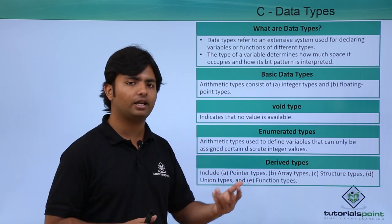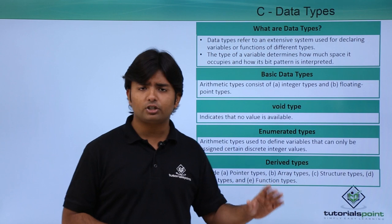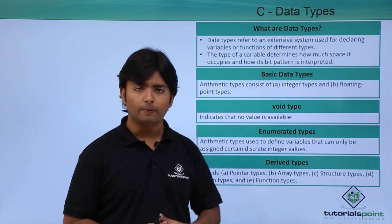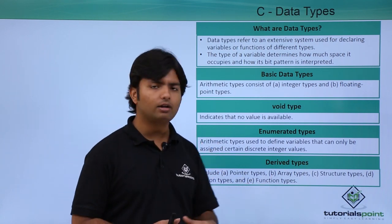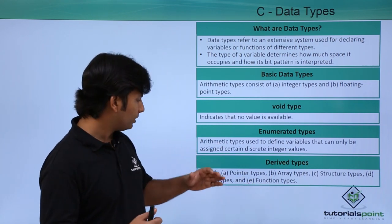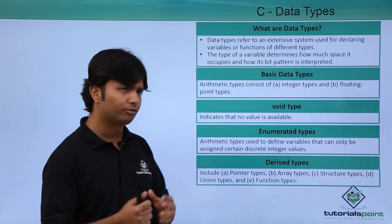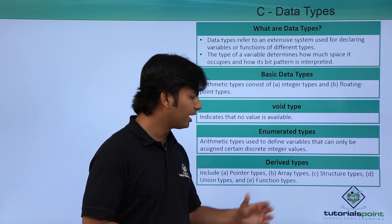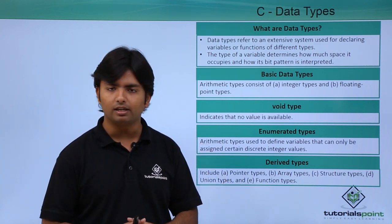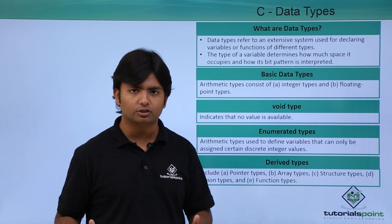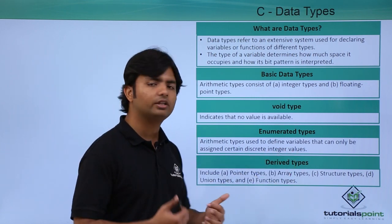Apart from that, we have some derived data types like arrays, pointers, structures, unions, and functions. Pointers will be for storing the address of a variable. Arrays are when you want to store similar values in large scale—you want to make a collection of such values. Similarly, structures and unions are customized data types which we will discuss in our coming videos.